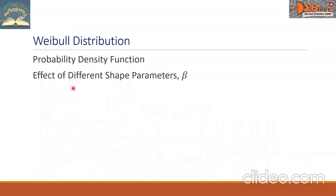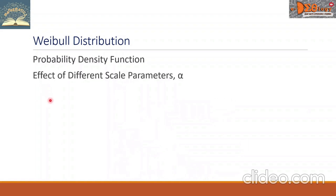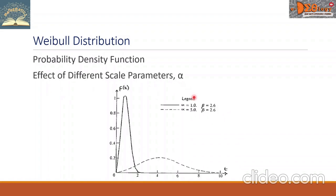This is the effect of different shape parameters beta. We have here four curves. Alpha is constant and equal to 1, and the values of beta vary — we can see the different graphs here. We also have the effect of different scale parameters alpha. In our example, we have two graphs where beta is held constant at 2.6 with different values of alpha.